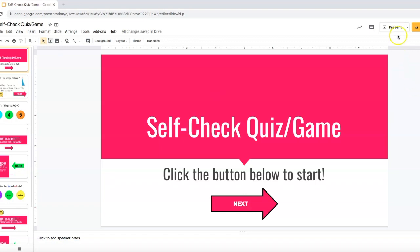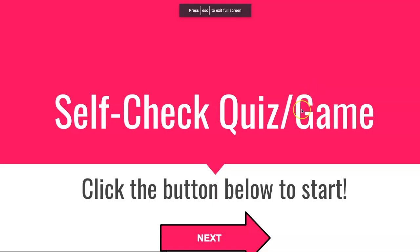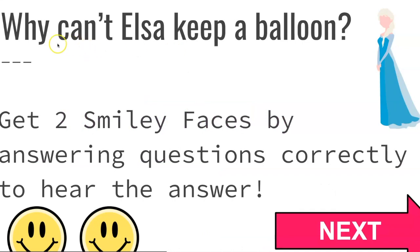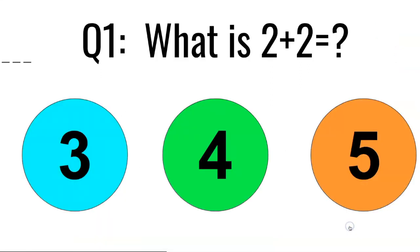So we start off — we are going to present it. I click present and we have a self-check quiz or game, and click the button below to start. So I'm going to go ahead and press next. Why can't Elsa keep a balloon? You get two smiley faces by answering questions correctly to hear the answer. Click the big next button. Again, very visual. This will work on a tablet, on a Chromebook — it will work on anything because it's a presentation.